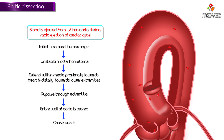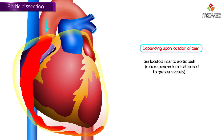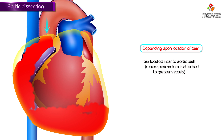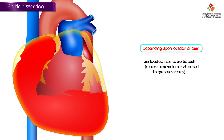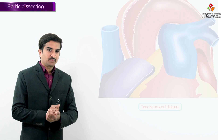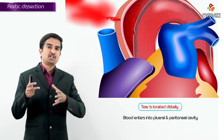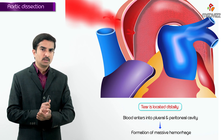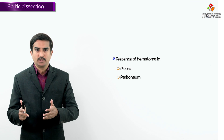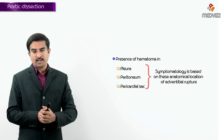If a hematoma forms and the adventitia ruptures close to the aortic valve where the pericardium attaches to the great vessels, blood enters the pericardial sac, causing cardiac tamponade. If the location is more distal, blood may enter the pleural or peritoneal cavities, leading to massive hemorrhage in those anatomical locations. The location of adventitial rupture thus determines the symptomatology. This covers the pathogenesis and pathophysiology of aortic dissection.